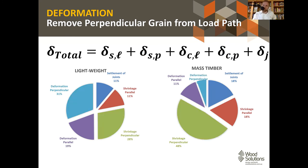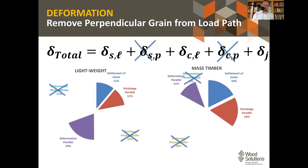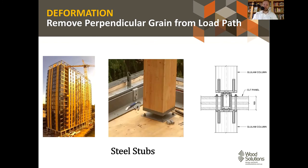One final solution to minimize building shortening is removing perpendicular grain from the load path entirely. Brock Commons — the former world's tallest timber building at 18 stories — uses a post-and-plate system: posts and two-way CLT slabs, with steel stub columns at highly concentrated load points to transfer loads and bypass the perpendicular grain altogether.